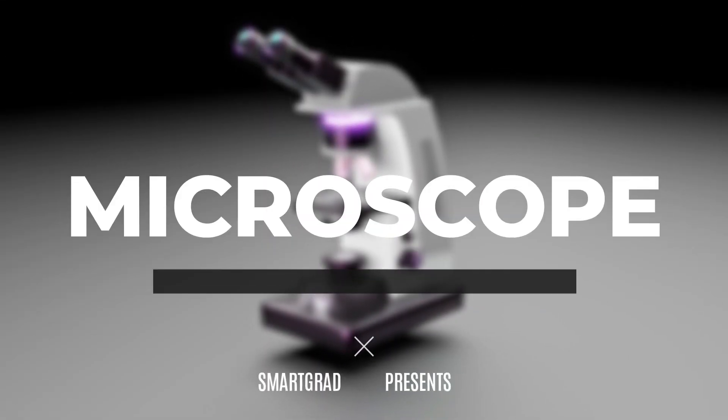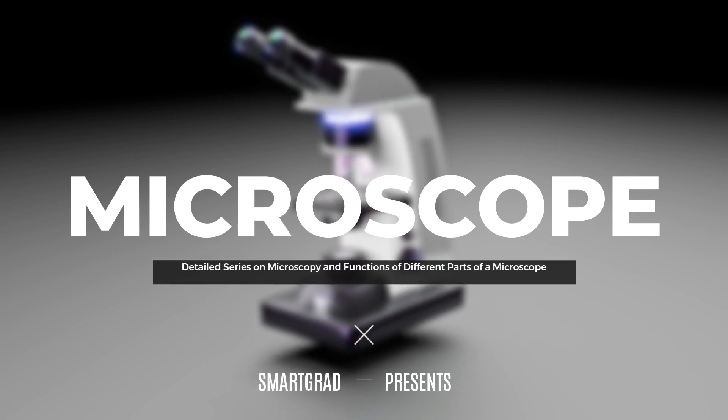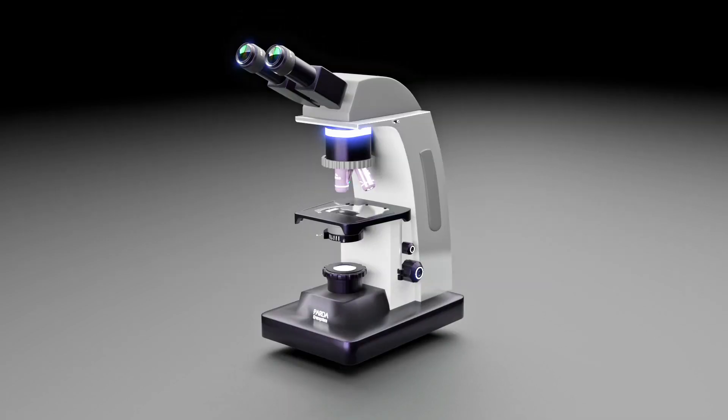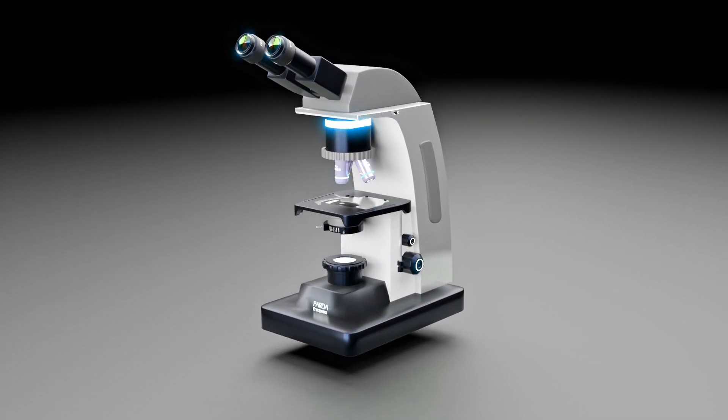Light microscopes were the first microscopes invented and they continue to be the most used type. To understand light microscopy, we must consider the way lenses bend and focus light to form images.